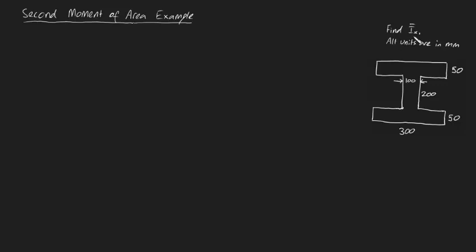We're asked to find the second moment of area about the x-axis at the centroid for this I-beam. And just to make it abundantly clear, our axis is located right here at the centroid.